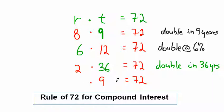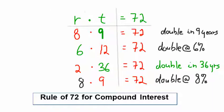What times nine is seventy-two? If you want your money to double in nine years — say you're retiring in nine years — you'd need eight percent from the bank. You'd have a hard time getting that at a bank these days.